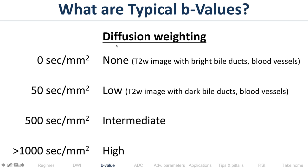Typical B values in the liver: 0, 50, 500, and 1000. B=0 means no gradients applied — a T2-weighted image with bright bile ducts and bright blood vessels. With B=50, low diffusion weighting — bile ducts and blood vessels get dark due to rapid flow or pseudo-flow. With B=500, intermediate — many things are dark. At B=1000, everything is dark except things with restricted diffusion.